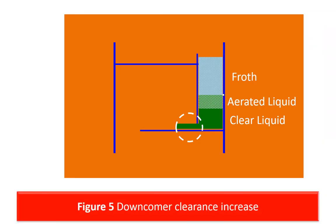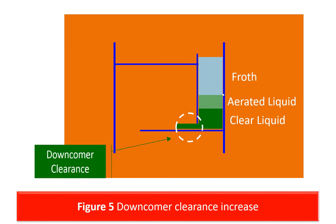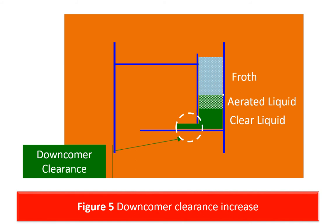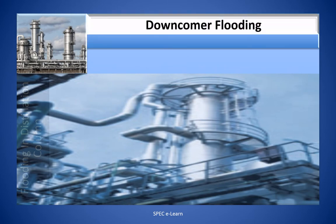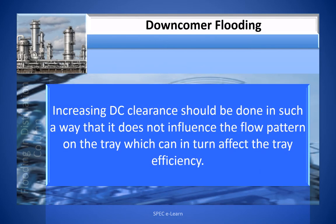This figure highlights the downcomer clearance area. Increasing the width of the opening slightly can decrease the head loss. However, increasing downcomer clearance should be done in such a way that it does not influence the flow pattern on the tray, which can in turn affect tray efficiency.